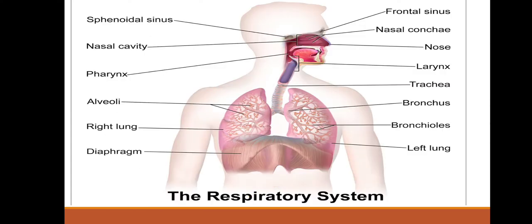This diagram shows the different respiratory parts: nose, larynx, trachea, bronchus, bronchioles, alveoli, diaphragm, pharynx, nasal cavity, and lungs — including the right lung.